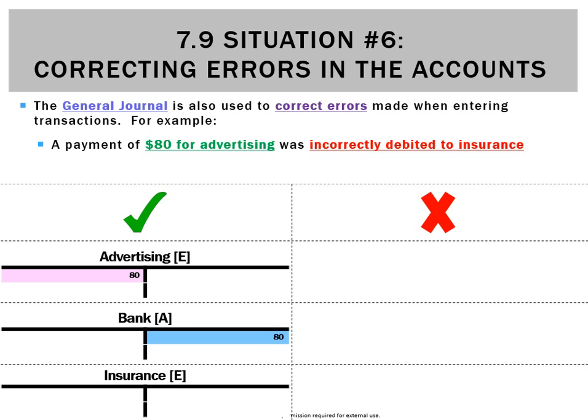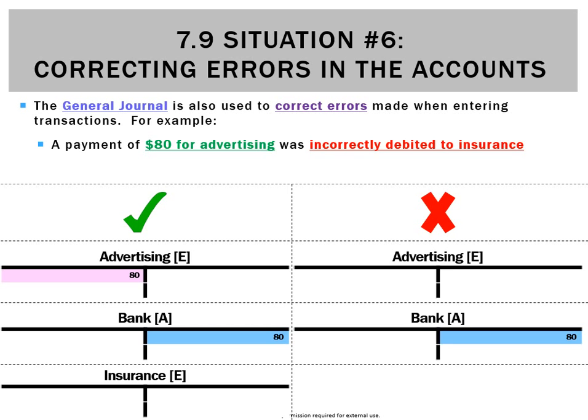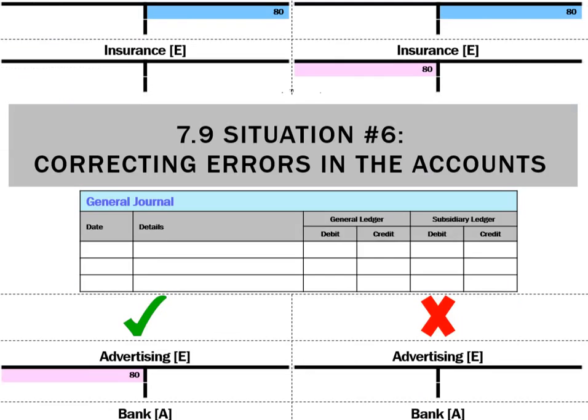What did we do? We forgot to call it advertising. We did record a payment so bank would have gone down, but what we did instead was call it insurance, which is a debit. So we're going to fix the accounts on the right to make them look like the accounts on the left.